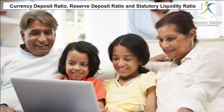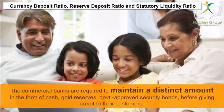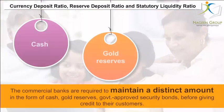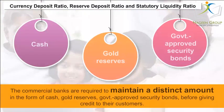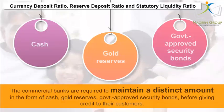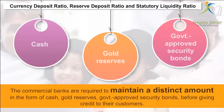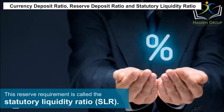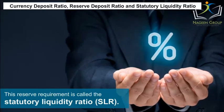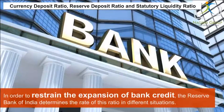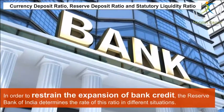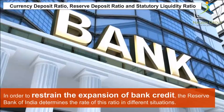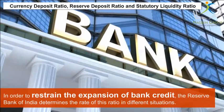In India, commercial banks are required to maintain a distinct amount in the form of cash, gold reserves, and government-approved security bonds before giving credit to their customers. This reserve requirement is called the Statutory Liquidity Ratio or SLR. In order to restrain the expansion of bank credit, the Reserve Bank of India determines the rate of this ratio in different situations.